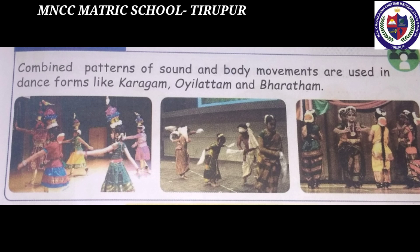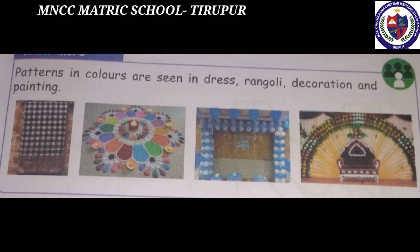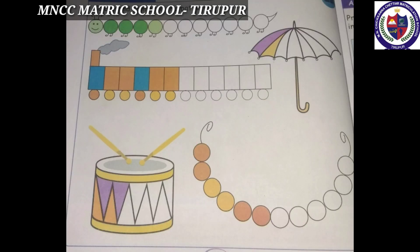See the pictures: the first one is Karagam, the second picture is Oyilattam, and the last one is Bharatanatyam. Combined patterns of sound and body movements are used in dance forms like Karagam, Oyilattam, and Bharatanatyam. Patterns in colors are seen in dress, rangoli, decoration, and painting. Activity: draw the above pictures, color and complete the pattern. Thank you.